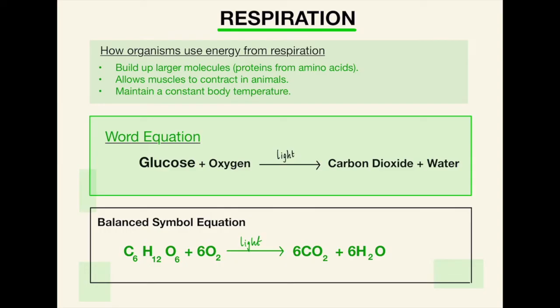And again the balance symbol equation, exactly the same as photosynthesis. Again with the symbols C6H12O6, that is quite a difficult one to remember, but just spend a bit of time learning that one and it will pay off in the long run. Plus 6O2 makes 6CO2 and 6H2O. Again just two things you've got to learn.